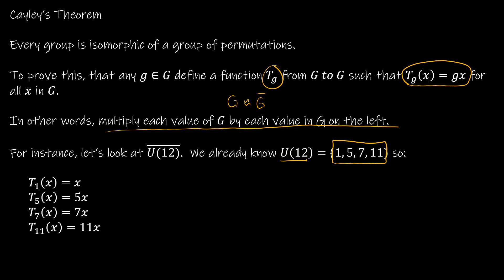Cayley's theorem tells me to take those values and form t_1, t_5, t_7, and t_11, meaning I multiply each element by that value on the left and write it as a permutation. For t_1, written as a two-line permutation: one maps to one, five maps to five, seven maps to seven, eleven maps to eleven. So this is just the identity permutation — it's not changing anything.